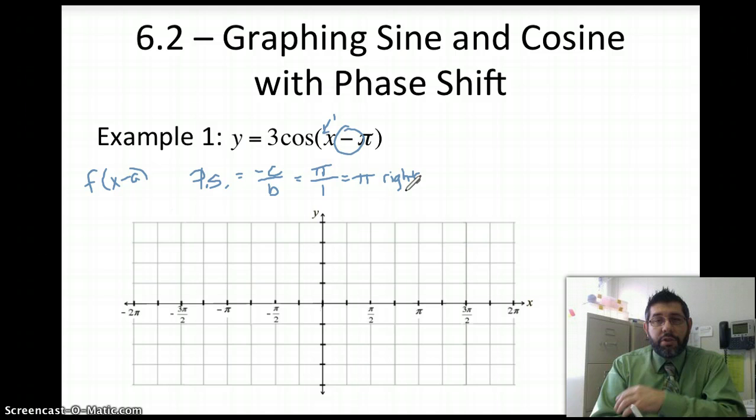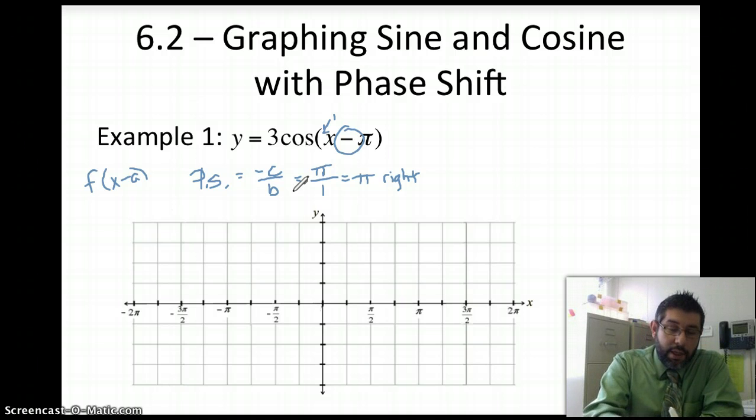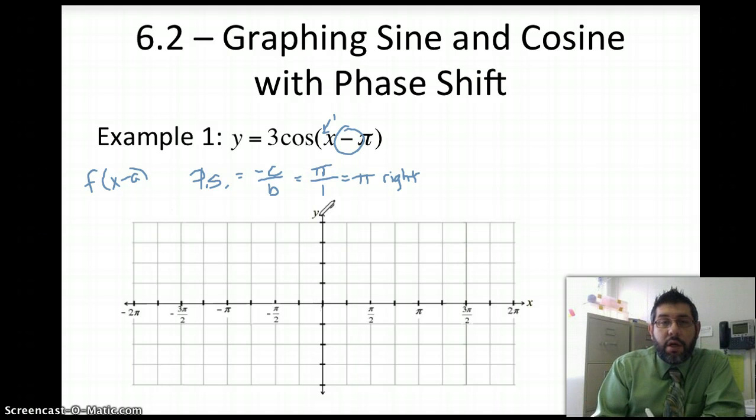Alright. So here's what we're going to do. We could do a table of values, but what we're really going to do is use some step-by-step graphing. We're going to graph 3 cosine x first, and then we'll do our phase shift, okay? So let's do this in red here or in orange, we'll go ahead and graph y equals 3 cosine x.